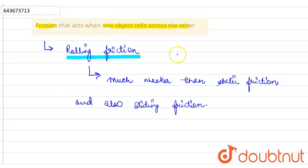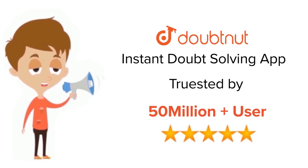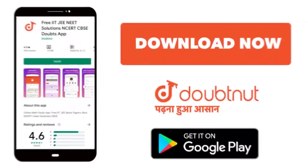That is called rolling friction. Hope you understood this question. For class 6 to 12, up to IIT-JEE and NEET level, trusted by more than 5 crore students, download Doubtnut app today.